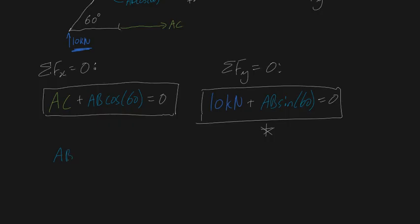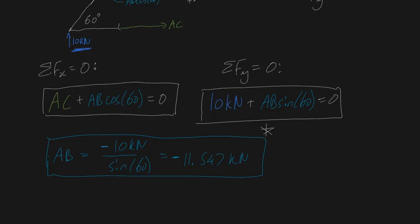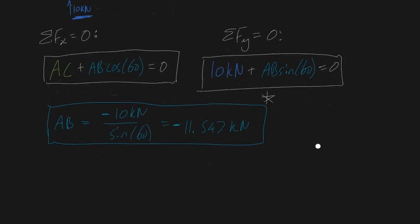AB is going to be equal to, once you take the 10 kilonewtons over to the other side, minus 10 kilonewtons all over sine 60, which when evaluated is 10 divided by sine 60, which amounts to minus 11.547 kilonewtons. That is AB. Don't let the negative sign distract you - I'm going to talk about the consequences of that later.